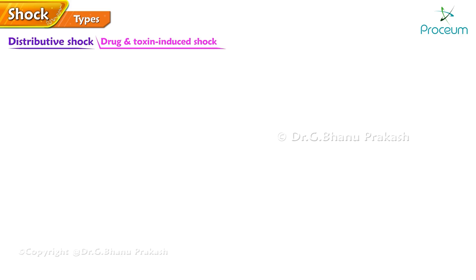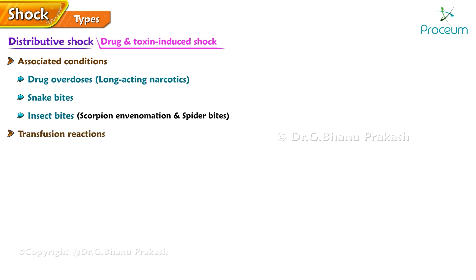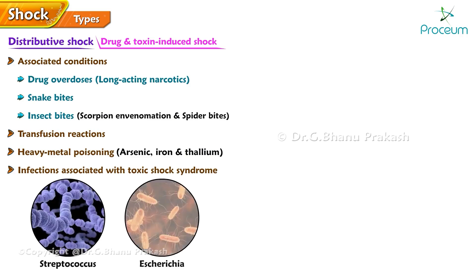Drug or toxin reactions that can be associated with shock or systemic inflammatory response syndrome-like syndromes include those associated with drug overdoses such as long-acting narcotics, snake bites, insect bites including scorpion envenomation and various spider bites, transfusion reactions, heavy metal poisoning including arsenic, iron, and thallium, and infections associated with toxic shock syndrome such as Streptococcus and Escherichia.